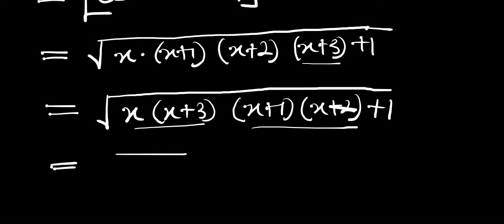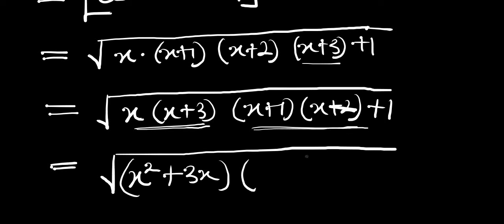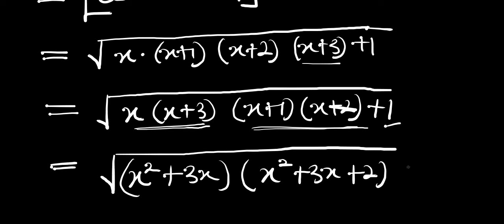The next thing is to expand these brackets. If you multiply this out you are going to have x squared plus 3x, then we have x squared plus 3x plus 2, and finally plus 1.